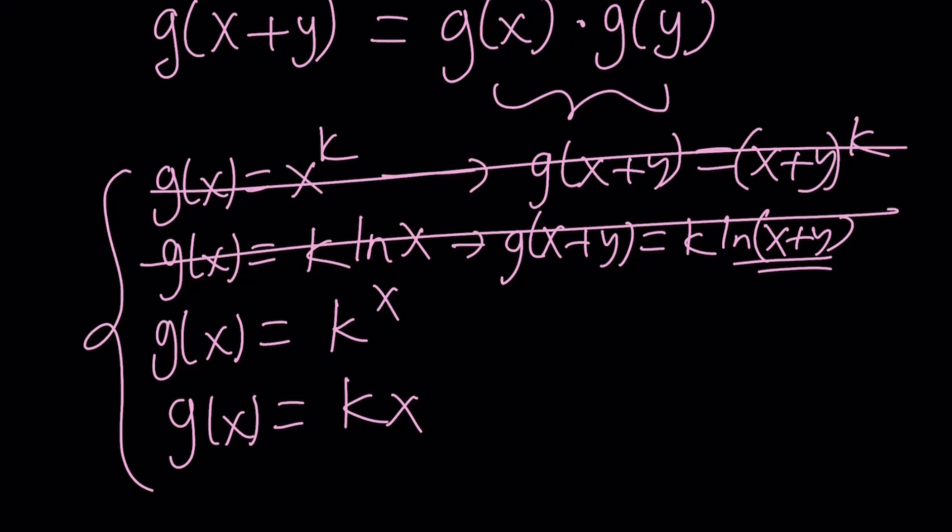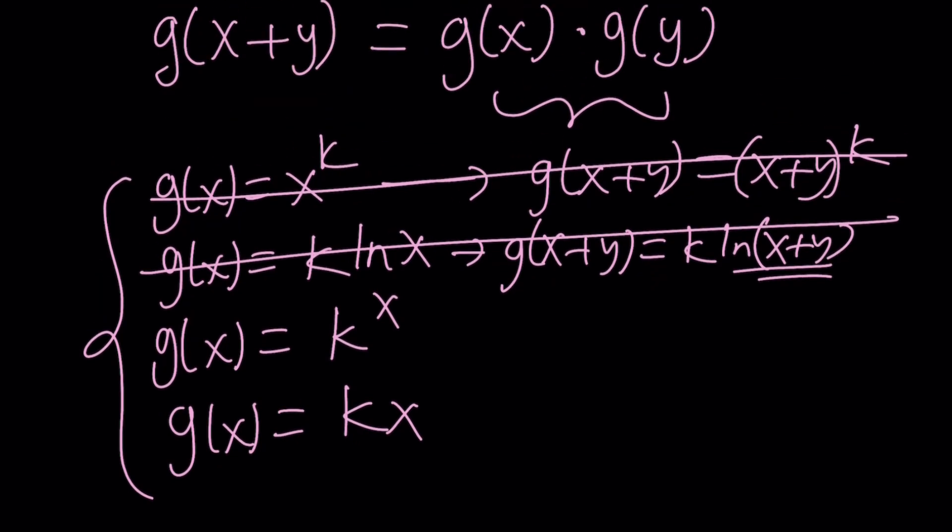The order I wrote it, hopefully, it's probably going to come up later. How about this one? k to the x. Exponential function. g of x plus y is k to the power x plus y by definition. And that can be broken down into k to the x times k to the y. And guess what? This is g of x. This is g of y. And yes, it does work. And this is the answer.